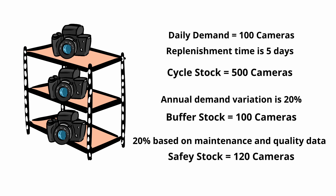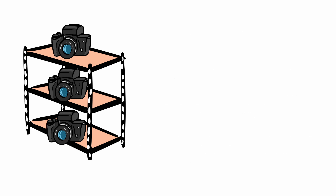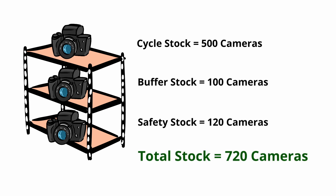In summary, to ensure 100% on-time delivery, the finished goods warehouse will be composed of 500 cameras of cycle stock, 100 cameras of buffer stock, and 120 cameras of safety stock, for a total of 720 cameras.